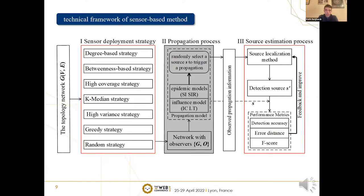The technical framework of the sensor-based method is shown in this figure. First, some sensor deployment strategy is applied to pre-deploy some sensors, which are used to capture the propagation information. Second, randomly select a source from the sensor-deployed network and trigger a given propagation model on such a network, and the observed propagation information can be observed. Third, these propagation data are input into the source-localization method to predict the diffusion source, then some performance metrics are used to compare the predicted source with the real diffusion source in order to further optimize the source-localization method.